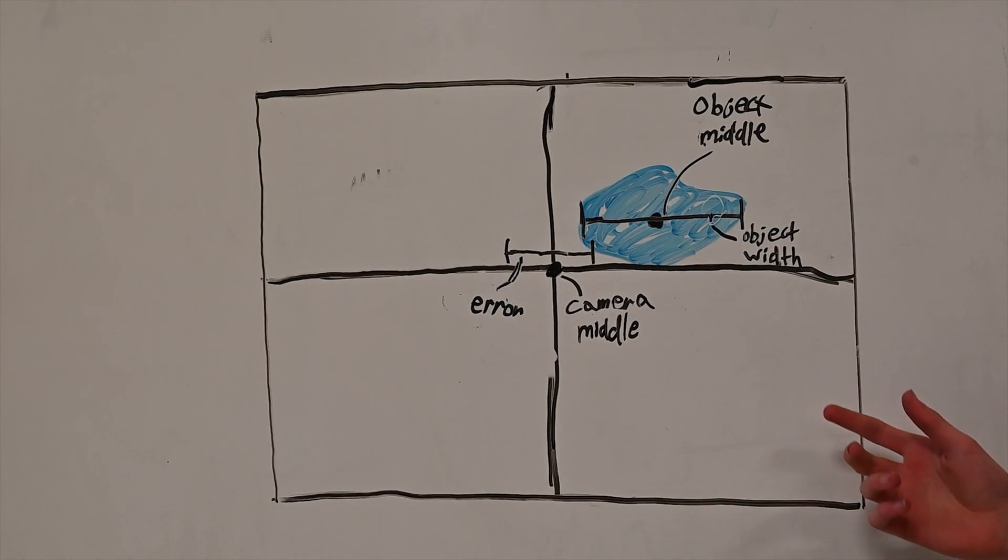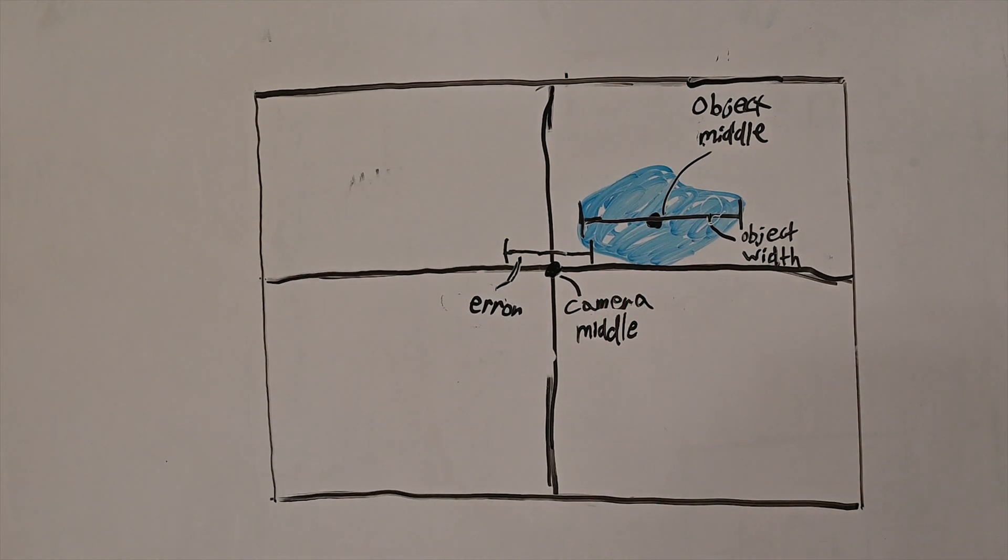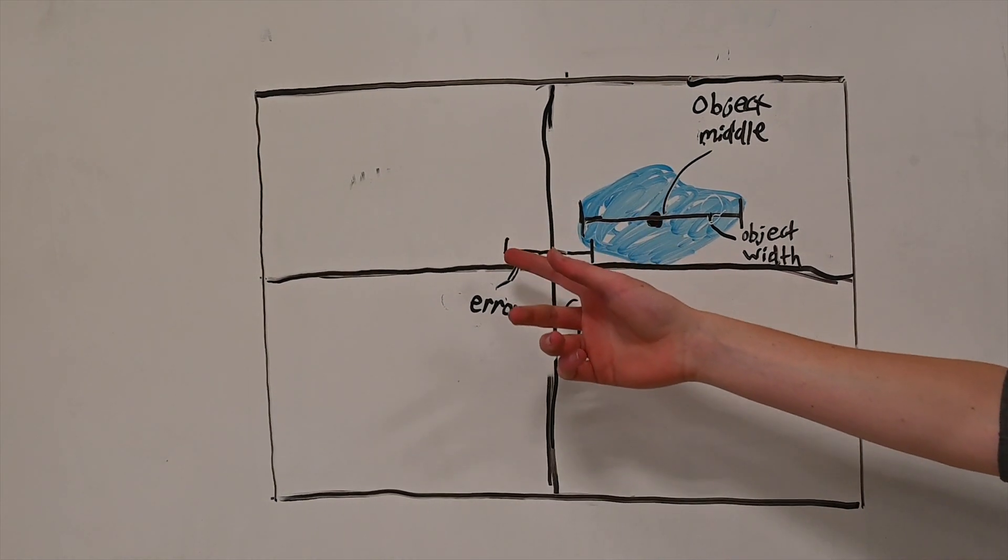So in order to make the vision sensor work, firstly you have to take the object middle and the camera middle. This just determines if the object is to the right or left of the center of the camera.